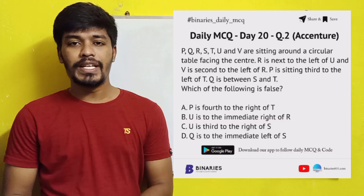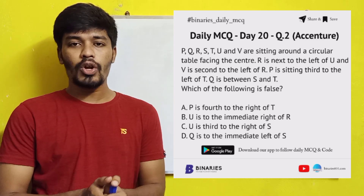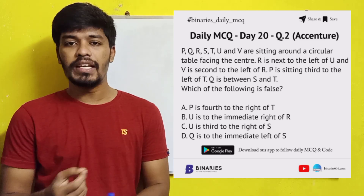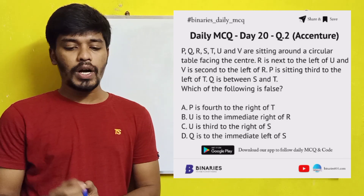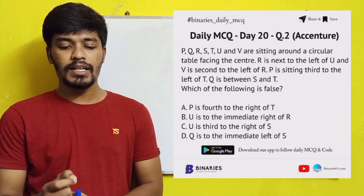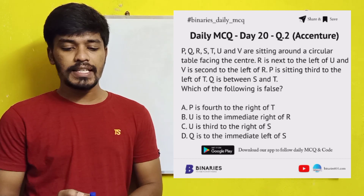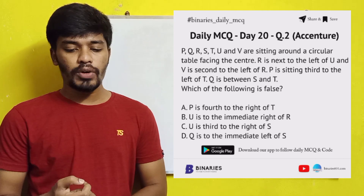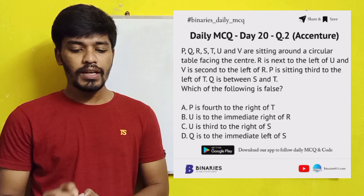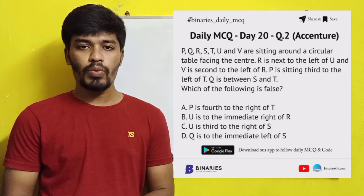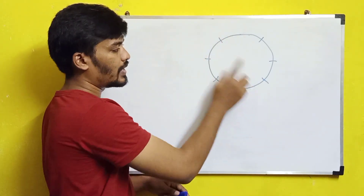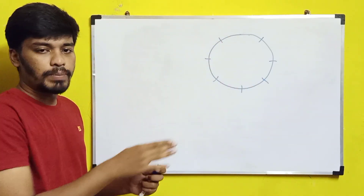The second and third questions are related to seating arrangement. P, Q, R, S, T, U, and V are sitting around a circular table facing the center. The clues given are: R is next to the left of U; V is second to the left of R; P is sitting third to the left of T; and Q is between S and T. There are seven people total. Let's solve this.